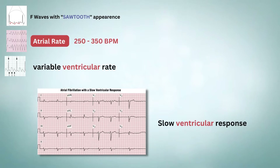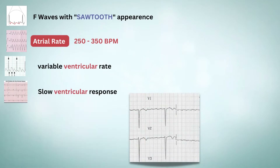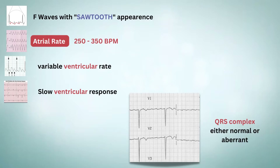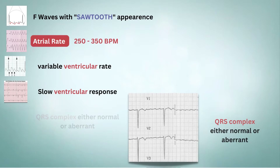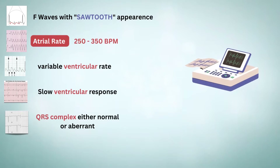Next, the ventricular response is usually slow. And lastly, the QRS complex is either normal or aberrant, depending on pre-existing IVCD or aberrant ventricular conduction. These are the common ECG features of atrial flutter.